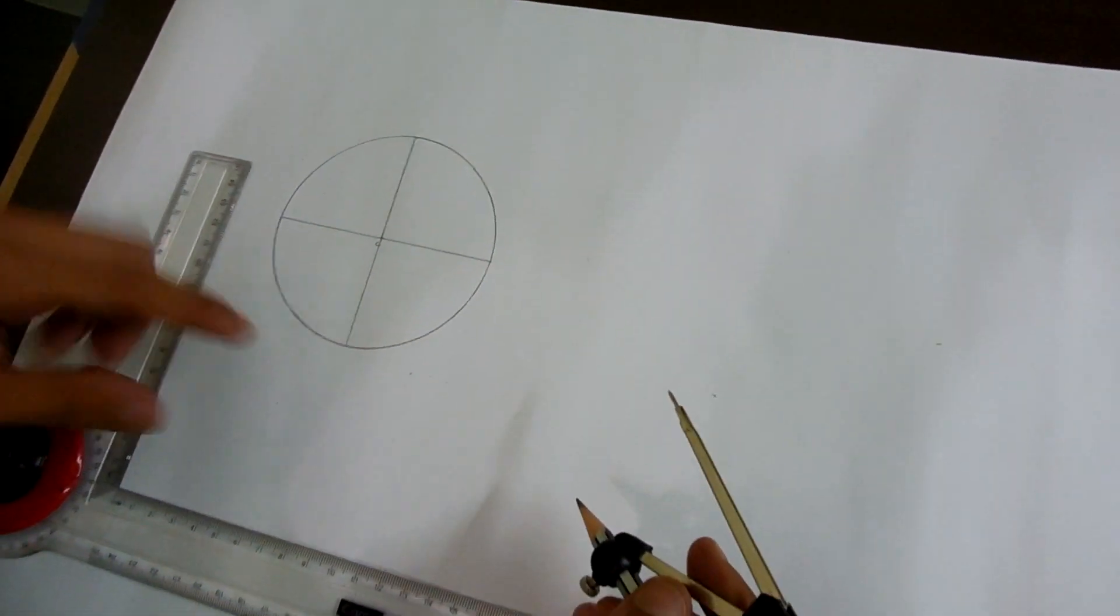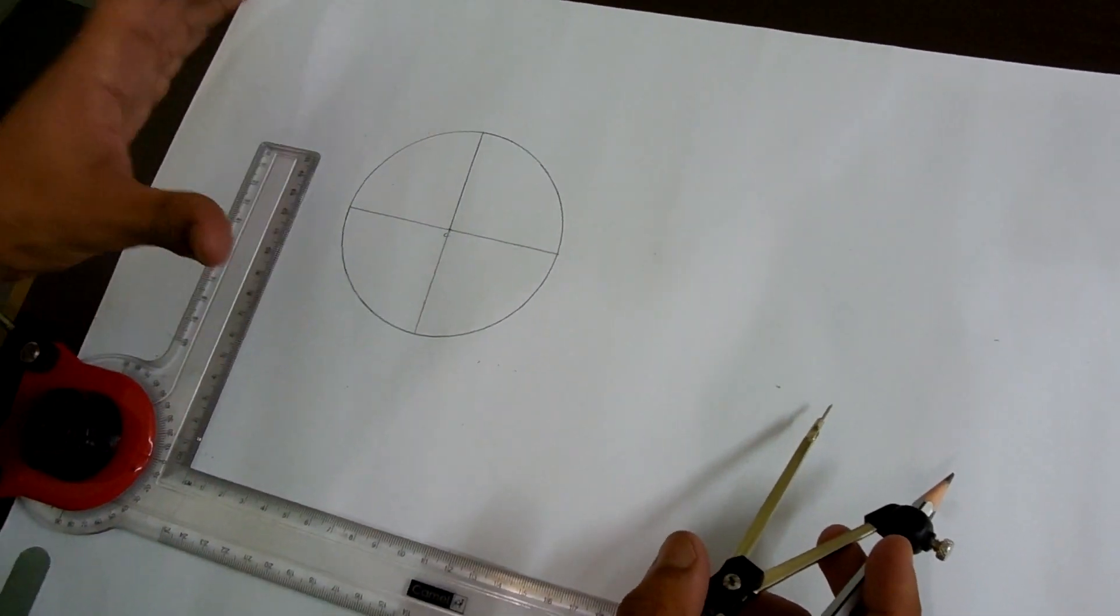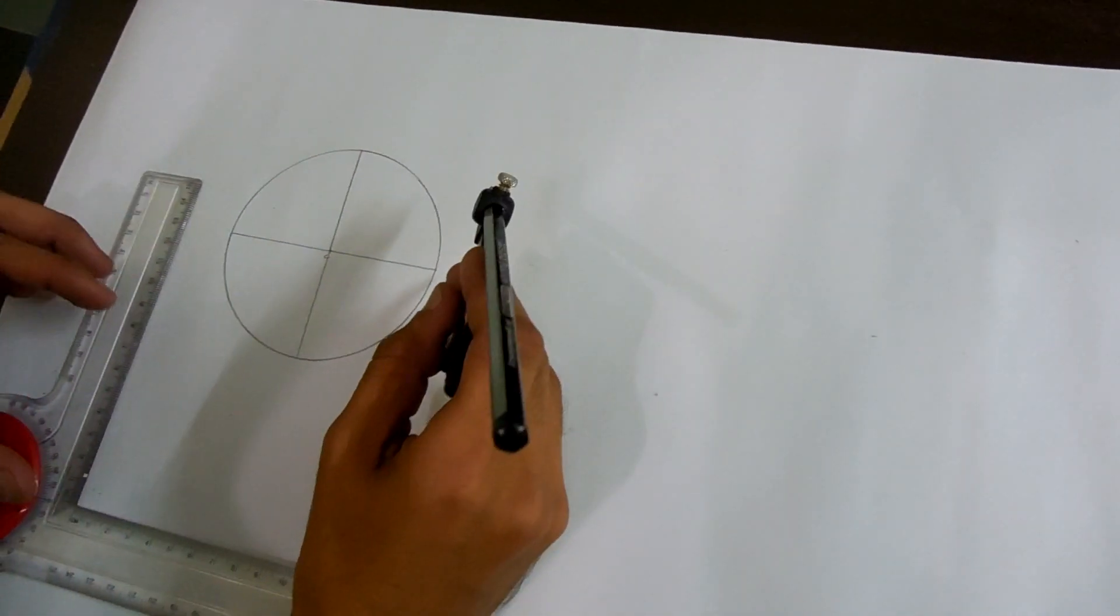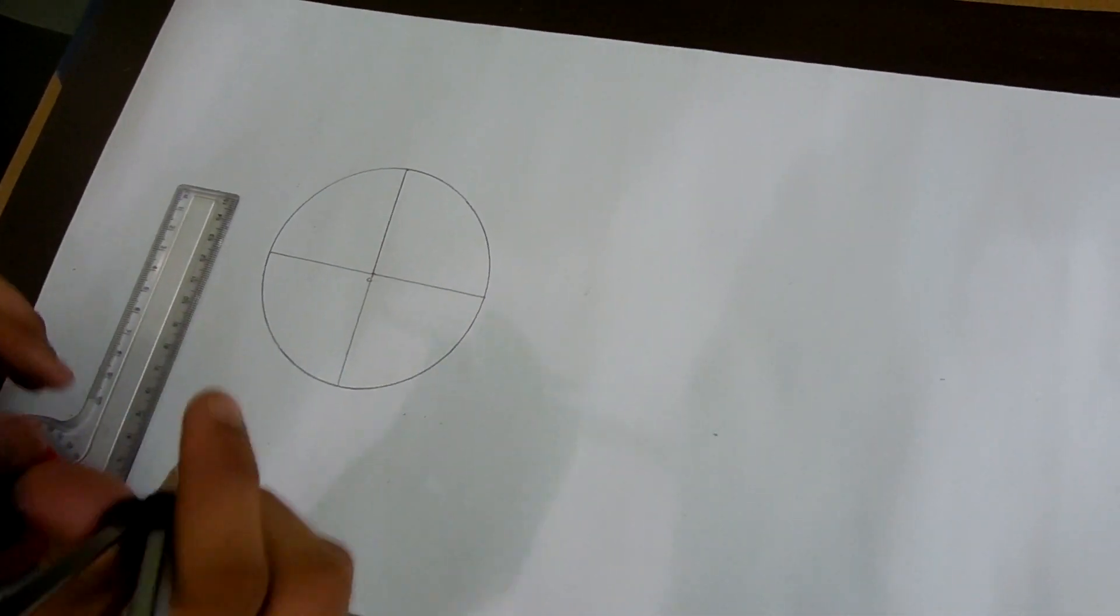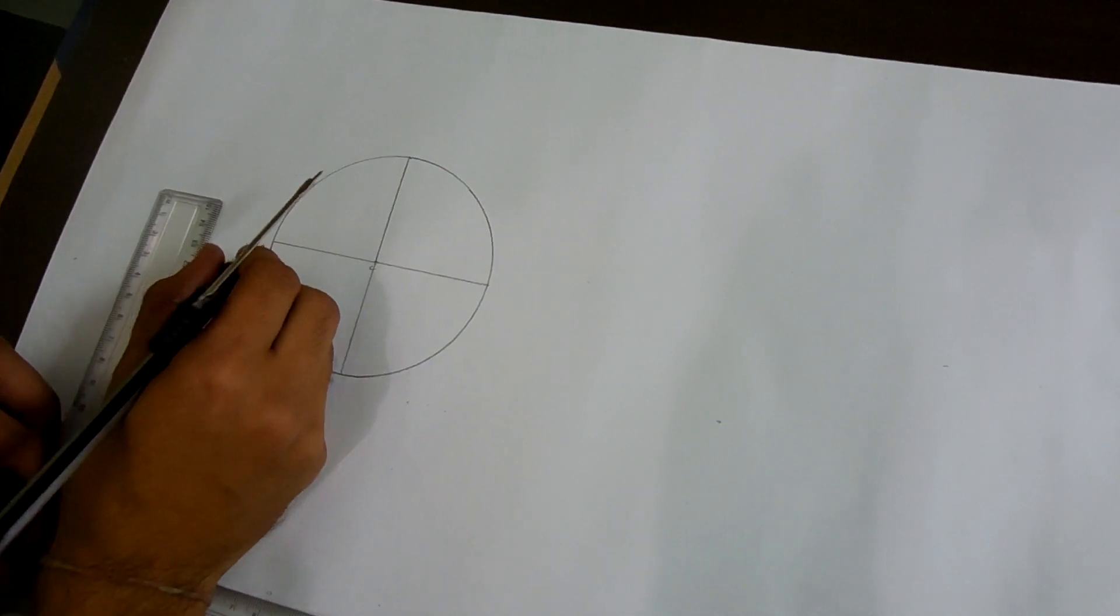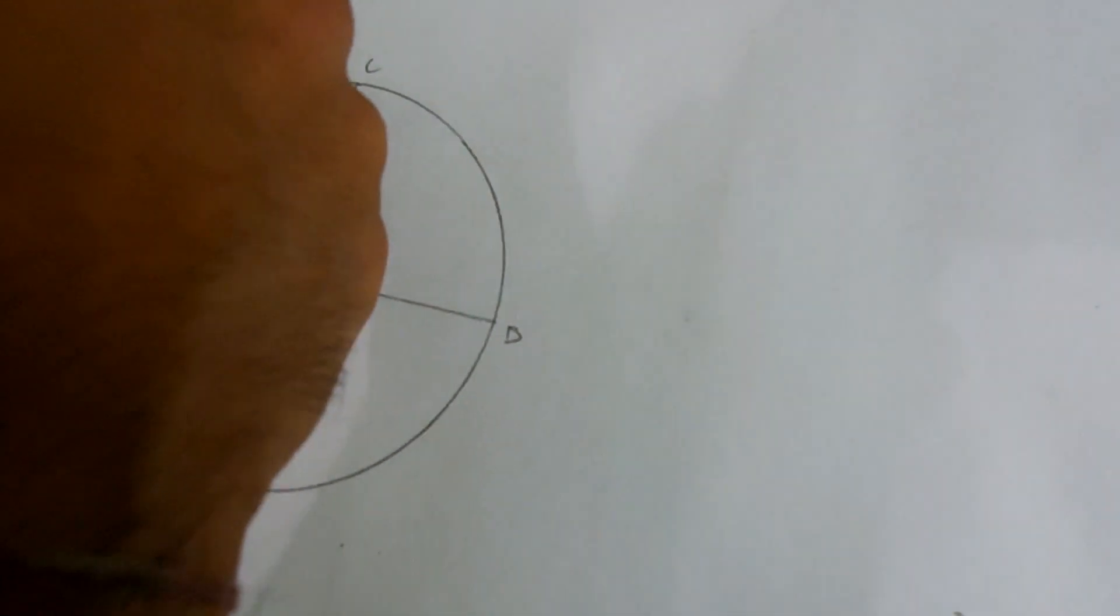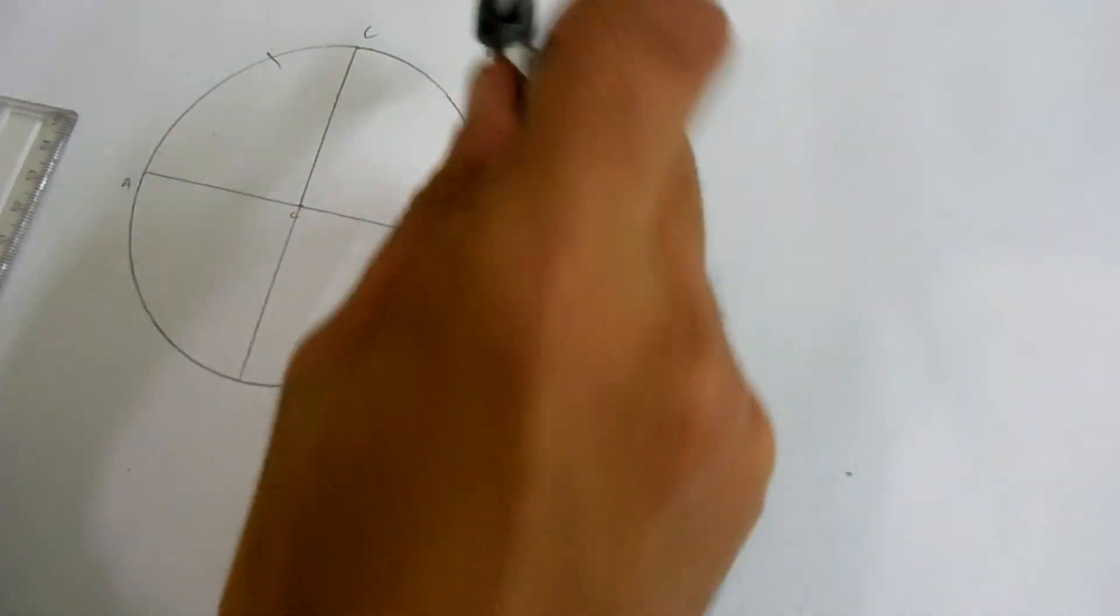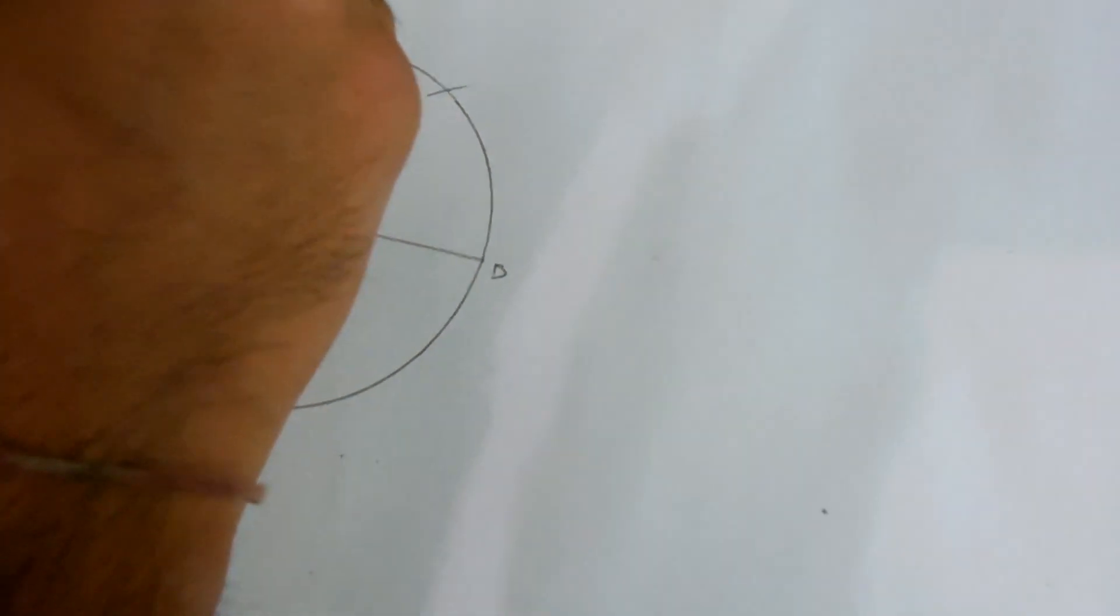We are dividing the circle in 12 equal parts. Instead of measuring with protractor as 30 degrees, we are keeping the radius constant. We are keeping one leg on A and cutting this circle by making an arc at B and C.